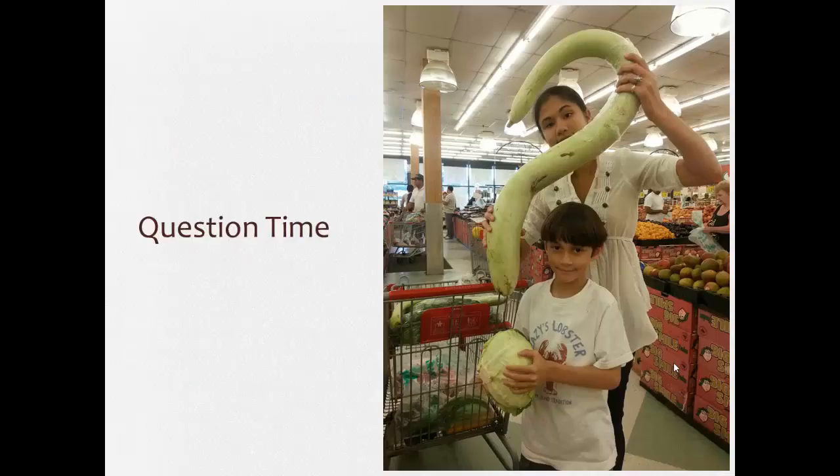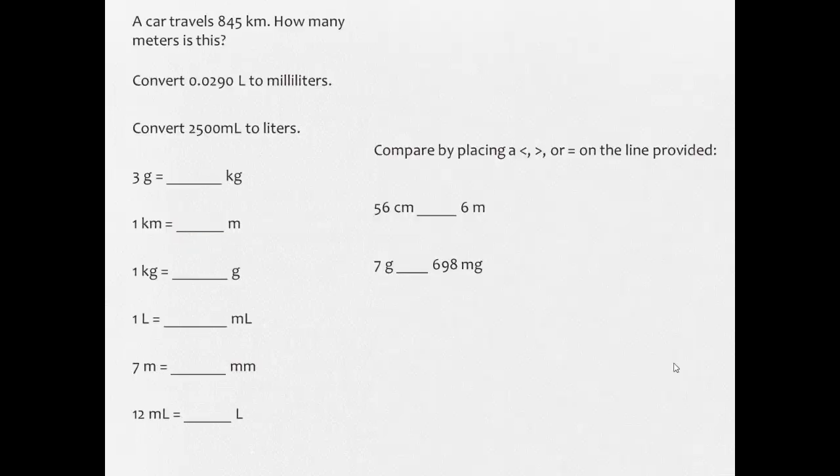All right, question time. Let's see how you can do with some of these. These are going to be a little bit trickier, but give them a try, and maybe I'll think of a prize for whoever can get the most correct. All right, so here, you're going to do similar to the examples that I did and see what we can convert. Kilometers to meters is 1 kilometer equals 1,000 meters. 1 liter is equal to 1,000 milliliters.